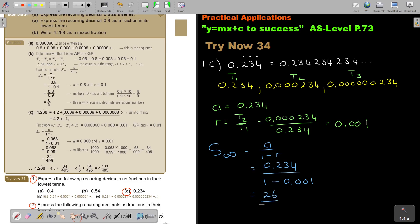26 over 111. So get your decimal and then press shift, the second function, and then that ABC key. And that will then give you your vulgar fraction.